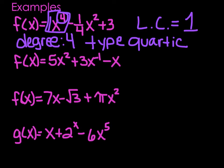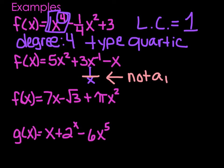The second one: f of x equals 5x squared plus 3x to the negative 1 power minus x. x to the negative 1 power is the same thing as 1 over x. Looking back at our definition, a monomial is a number, variable, or product of numbers and variables — this is not a product, it's a quotient. So this is not a polynomial at all.